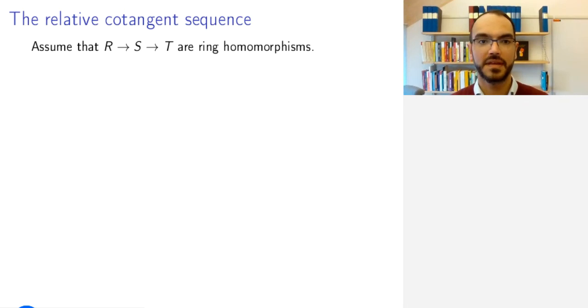Let us now take a look at some sequences that are partially exact and that will relate the modules of Kähler differentials in the case where we have this concatenated setting of an R-algebra S over which we have an S-algebra T.